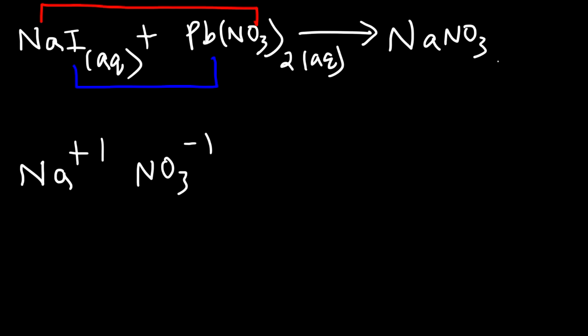Now we need to discuss the solubility of this compound, so you need to be familiar with the solubility rules. Nitrates are always soluble, and the group one alkali metals like sodium, lithium, and potassium are always soluble. So we're going to write AQ because they're soluble.